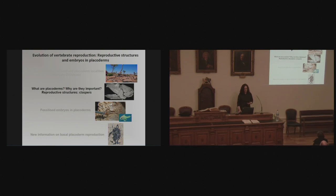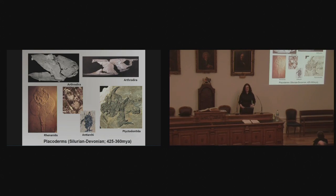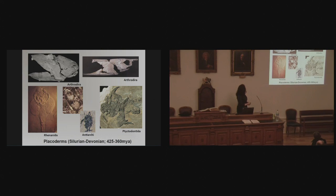After that brief introduction, I want to talk more about what placoderms are and why they're important, and talk about the reproductive structures known as claspers. This slide shows a range of variation of different placoderms. We have the arthrodires at the top — two arthrodires from the Gogo Formation. Then some other taxa including the ptyctodontids. We're going to be looking at this ptyctodon Rhamphidopsis from Scotland, and this antiarch from Scotland as well. This shows what a wide range of morphological variation placoderms have.